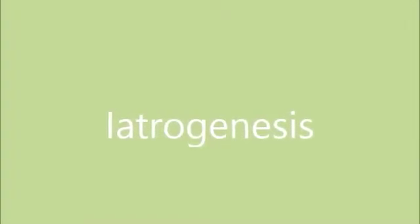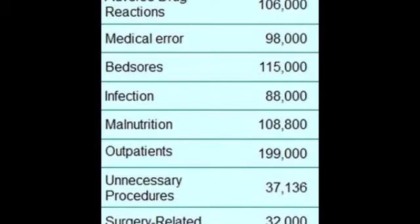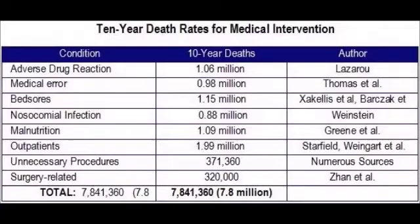The definition of iatrogenesis is the inadvertent and preventable induction of disease or complications by the medical treatment or procedures of a physician or surgeon. This is overly simplified, however, as the phenomenon of iatrogenesis is a large problem in Western biomedicine. Globally, it is estimated that 142,000 people died in 2013 from adverse effects of medical treatment. Some medical journal articles have concluded that iatrogenesis is the leading cause of death in the United States.